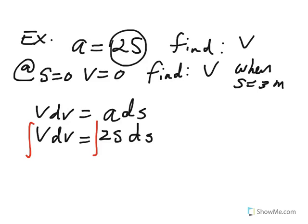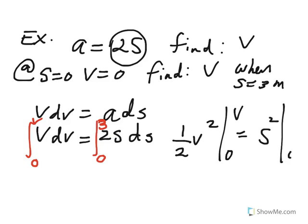So you could do that, or get the constant of integration and substitute the position. Let me put the limits actually. So here we know that when s is zero, velocity is zero, and when s is equal to three, the upper limit is three here, right? What is velocity? V. So this is a very simple integration. The integral of v dv becomes one half v squared, which has to be evaluated between zero to v, because the integral of 2s becomes s squared, which has to be evaluated between zero and three.